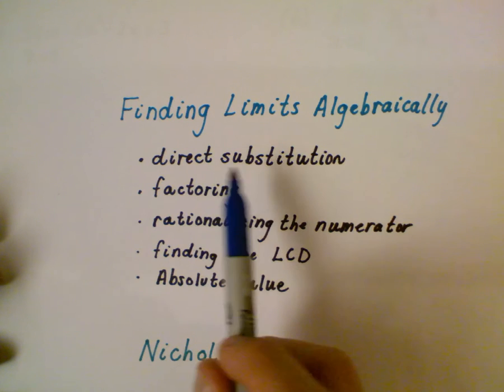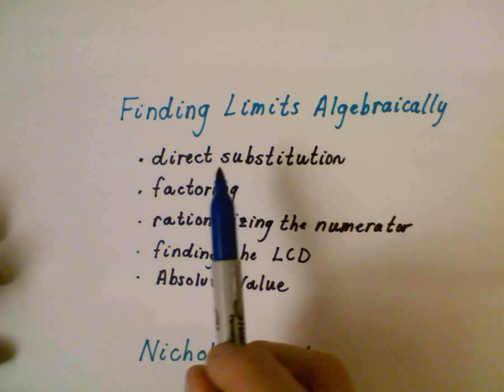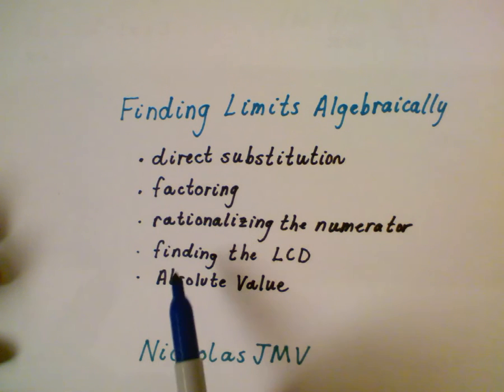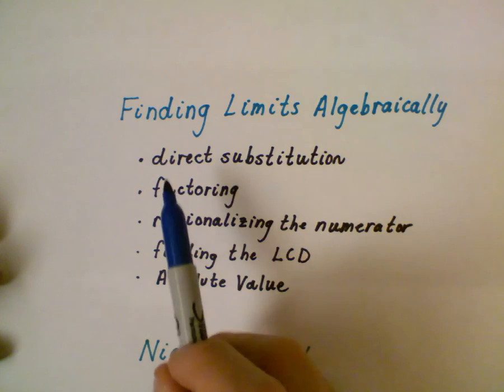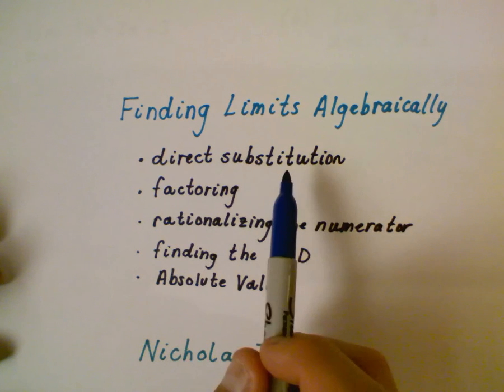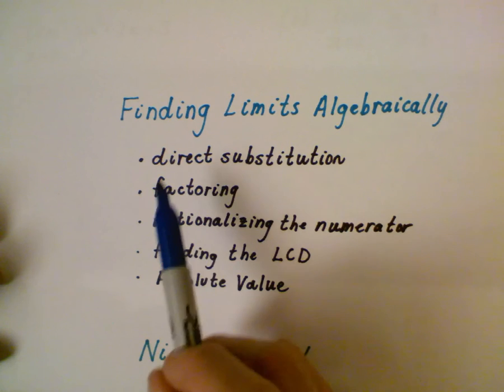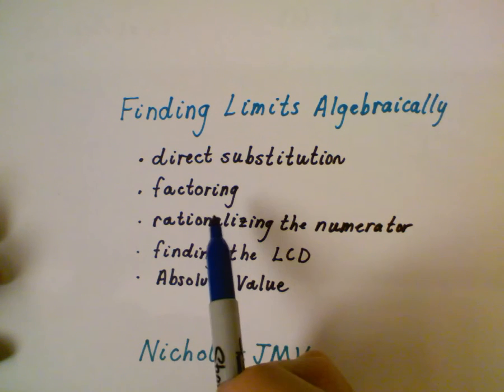The first step is always to try direct substitution. And if you can't do that, then we start going down the list here to see what one of these things may work for us. So the first two examples we're going to do - one direct substitution and one factoring problem. These are the most common ways algebraically we find limits.